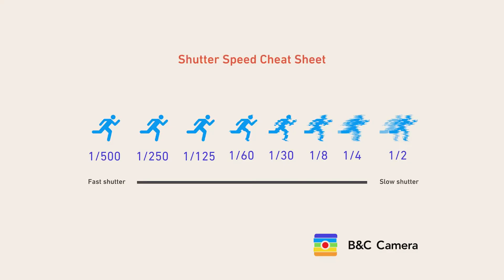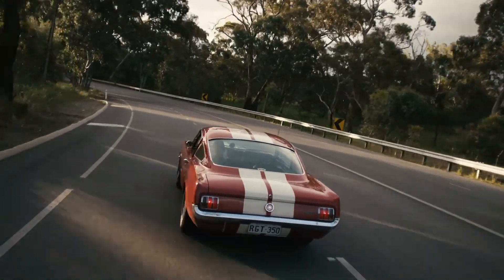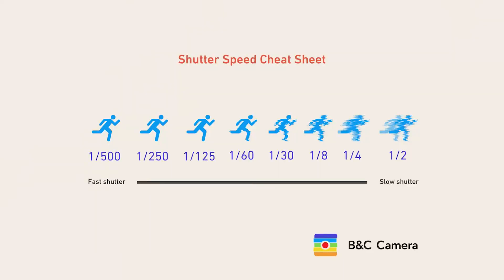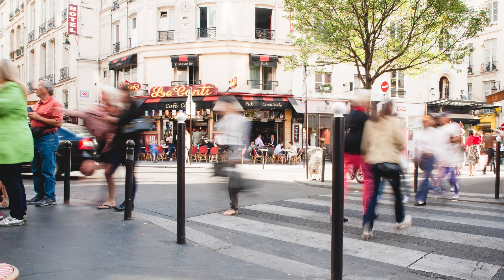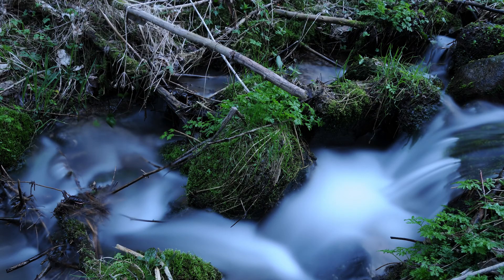1/30th of a second — use this to pan fast-moving subjects. 1/15th of a second — a shutter speed for panning and putting even more emphasis on motion blur. 1/8th of a second — this shutter speed will for sure blur fast-moving subjects. 1/4th of a second — the shutter is so slow that it will blur people when walking. 1/5th of a second — you will be able to make fast-flowing water into a blur.